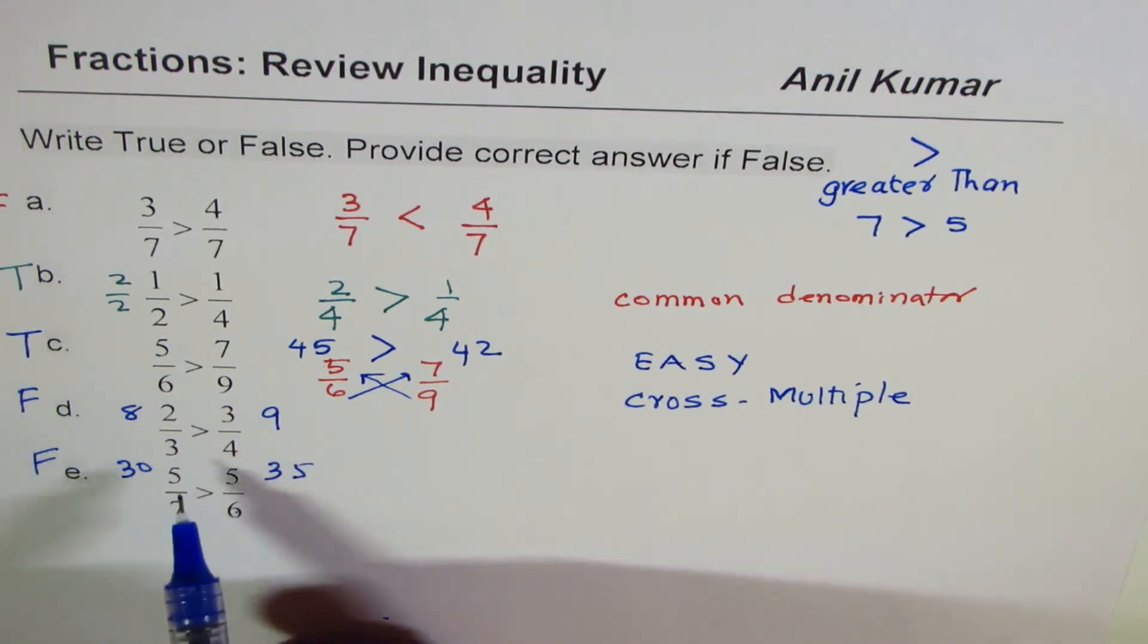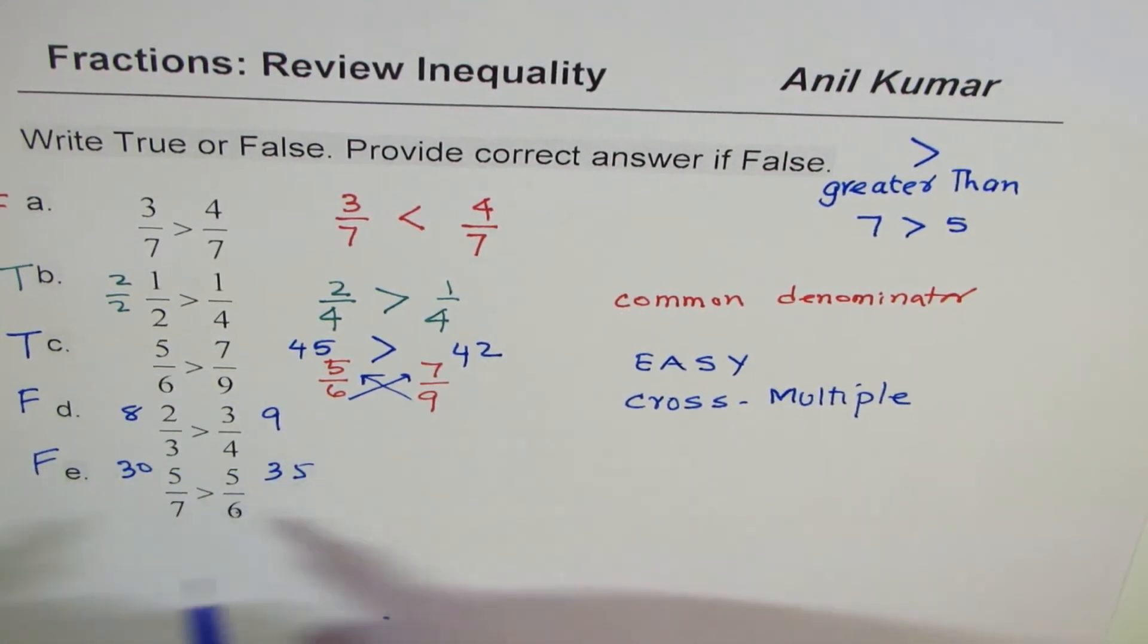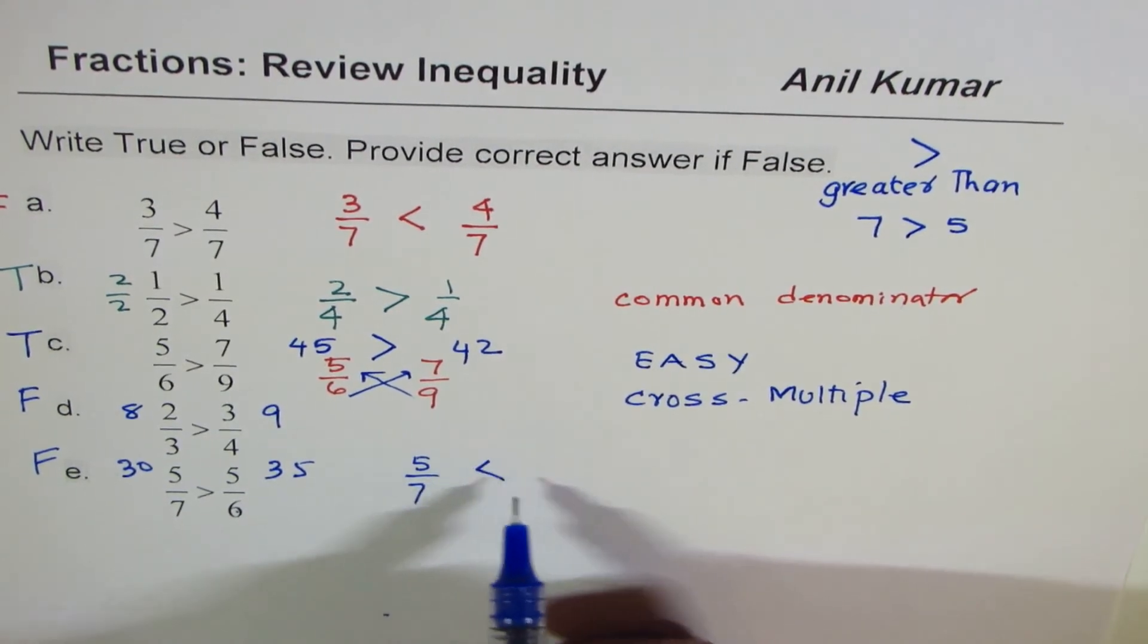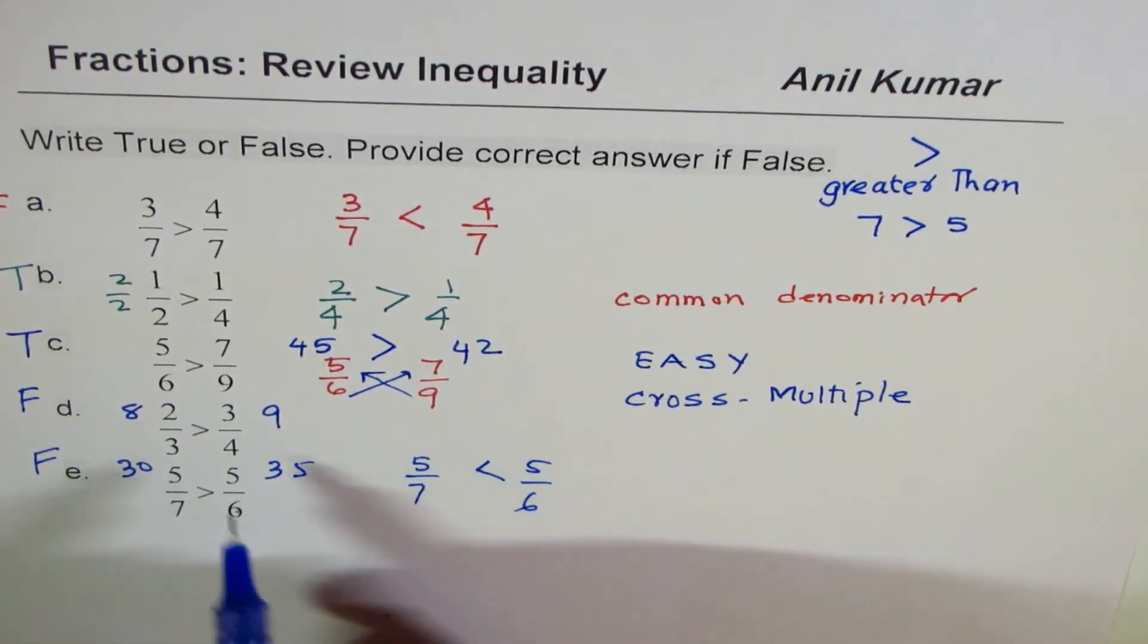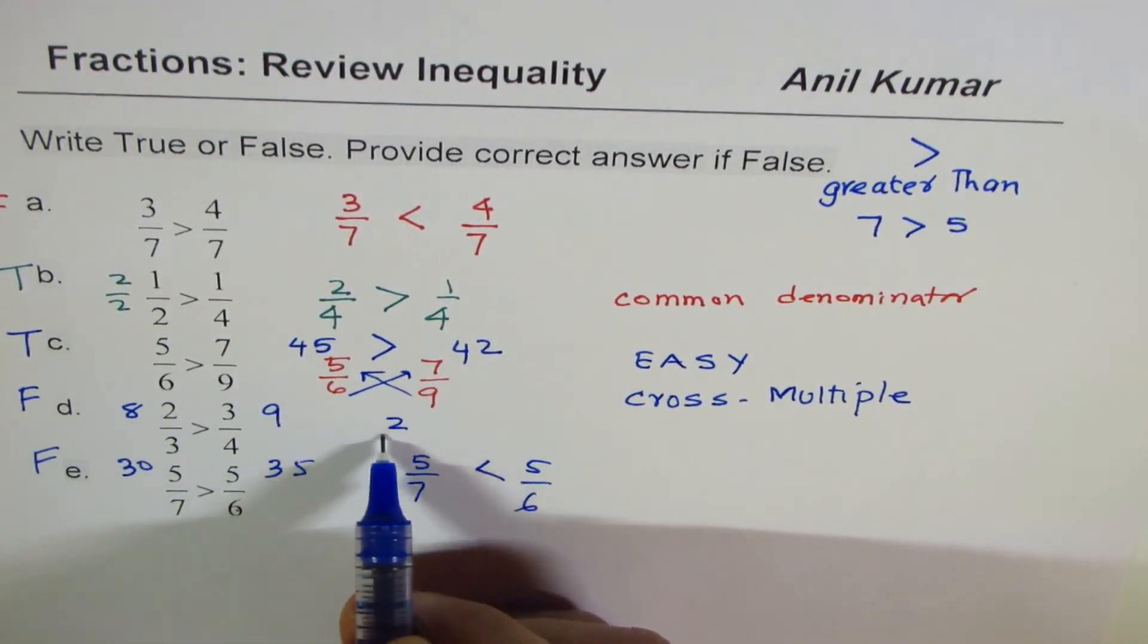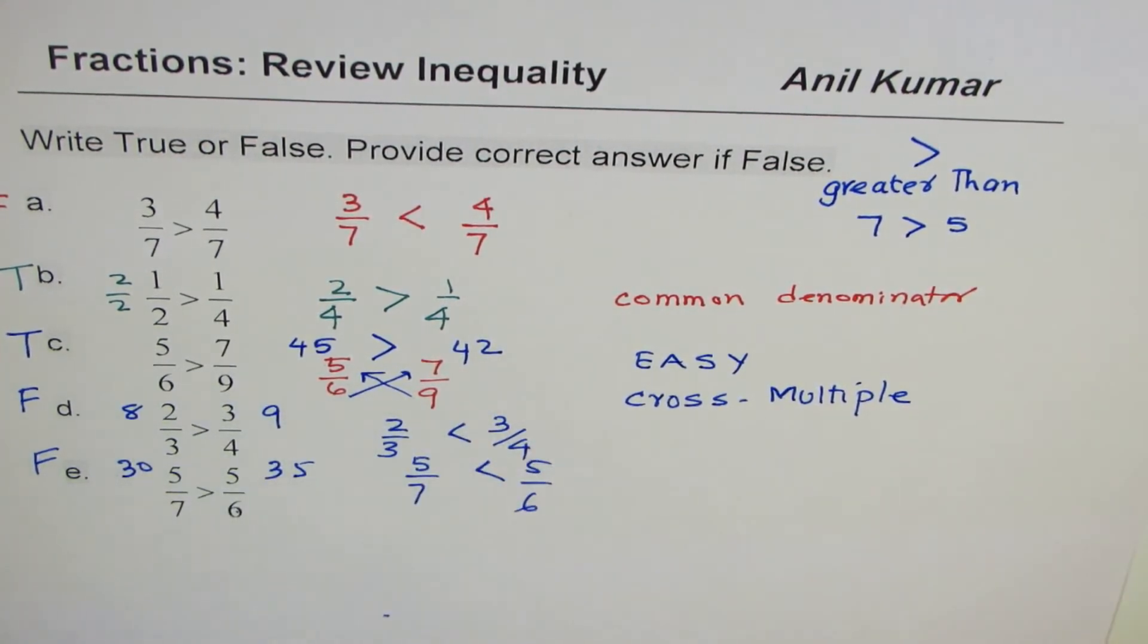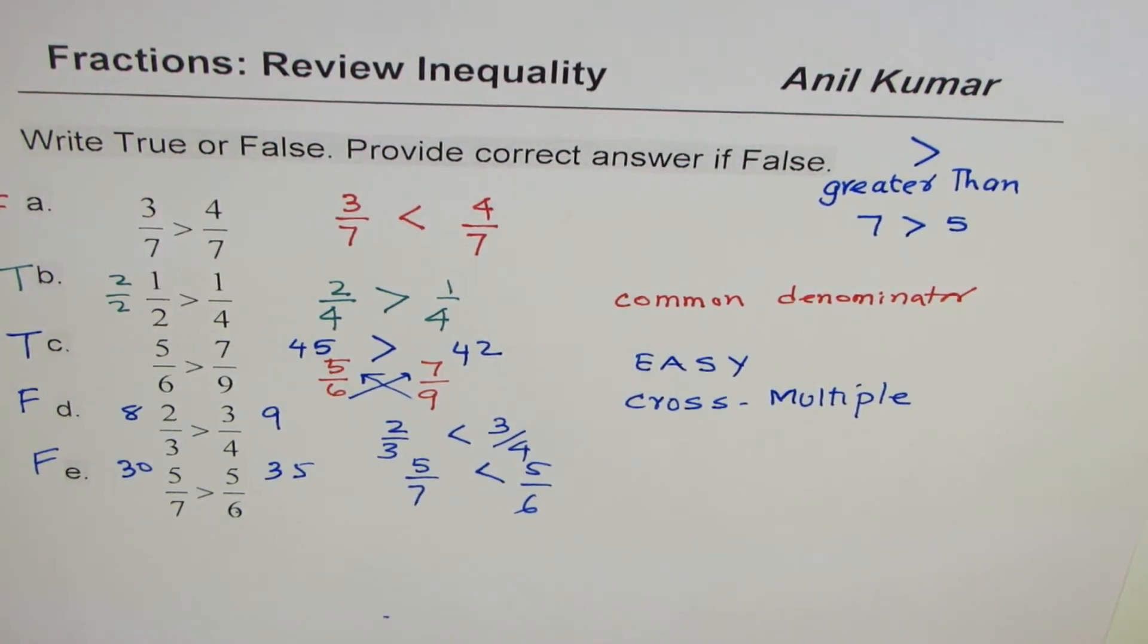So the correct answer for false will be we have to change the sign of the inequality. So we have 5 over 7 is less than 5 over 6. In this case we have 2 over 3 is less than 3 over 4, and so on.